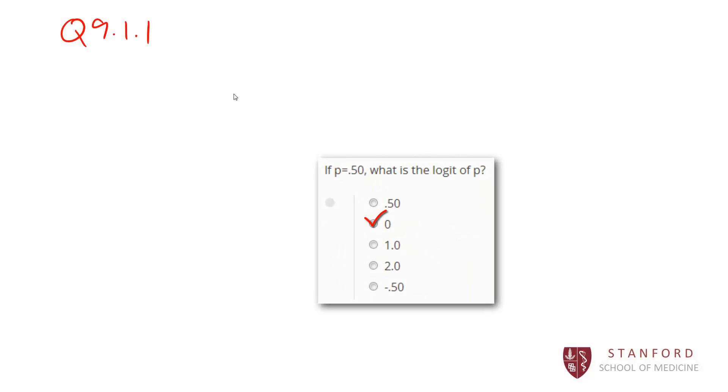The correct answer here is b. If our probability is 0.5, then our logit is going to be - remember our logit is the natural log of p divided by 1 minus p. That's 1 minus p will be 0.5. We do the natural log of 0.5 over 0.5. That's just the natural log of 1, so that will come out to be 0.